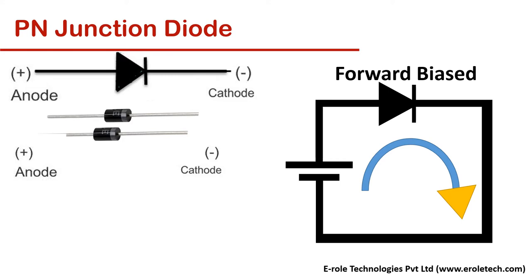Diodes are made of semiconductor materials like silicon or germanium. When silicon diode is connected in forward bias, it allows the flow of current when applied voltage across it is over 0.7 volt.